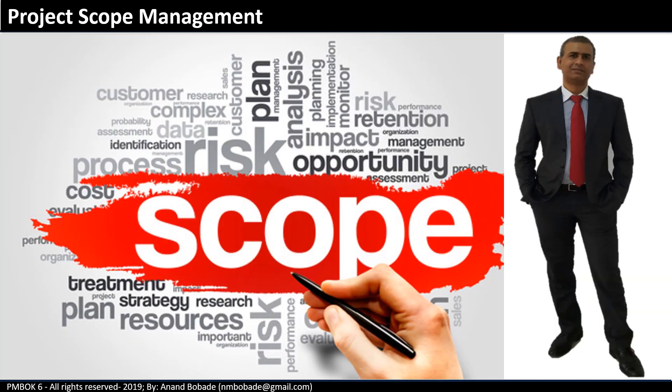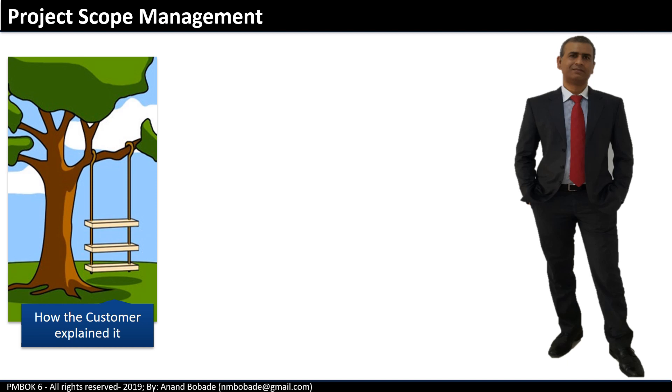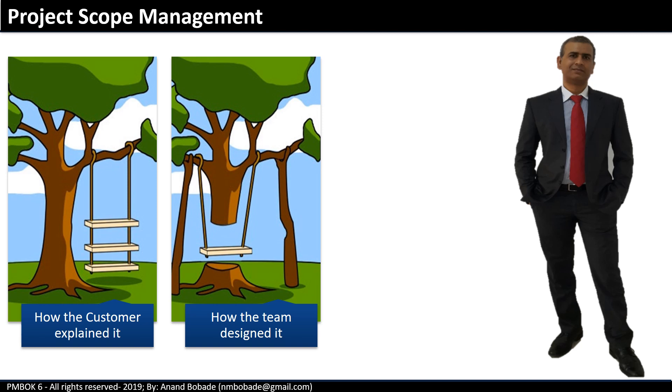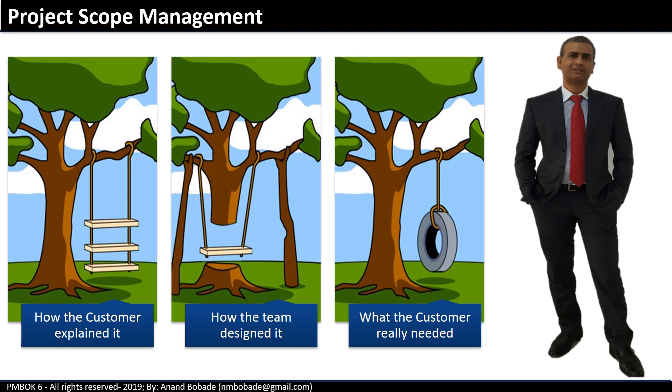Managing scope is one of the key challenges for a project manager. Project foundation depends on how clear your project requirements are. Project management and meeting customer expectations become extremely difficult when scope is not clearly defined. Customers may fail to explain what they wanted, or the project team may fail to clearly document customer requirements. For example, a customer wants to build a swing — this is how they explained requirements, this is how the team designed it, and the customer may have signed the design without clearly understanding it.